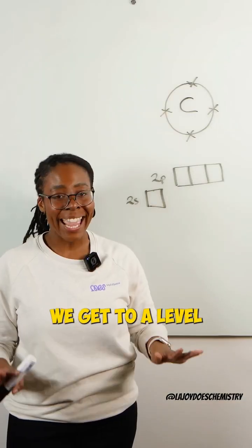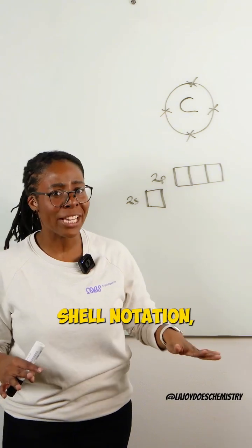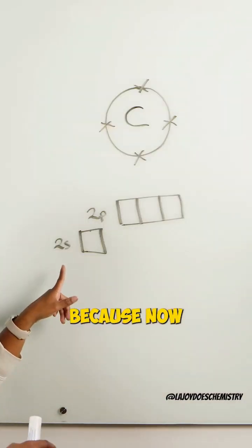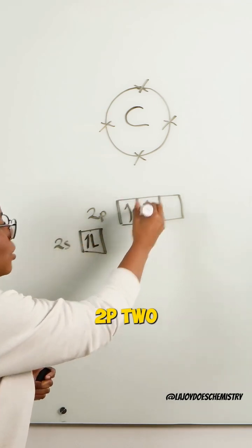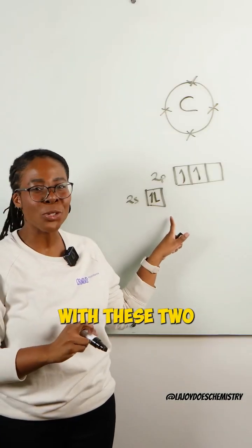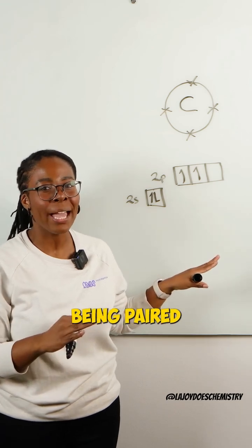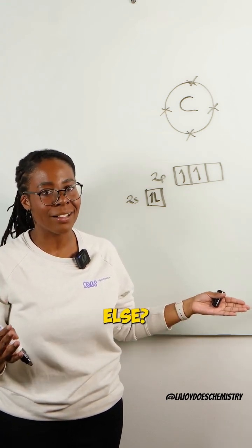But once we get to A level and our subshell notation, that falls apart because now we have 2S2 2P2. So especially with these two S electrons already being paired, why would they want to pair up with anything else?